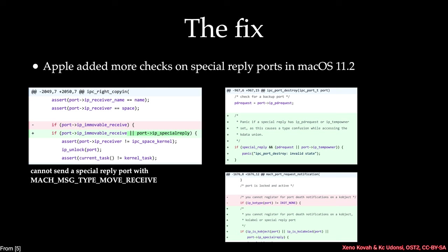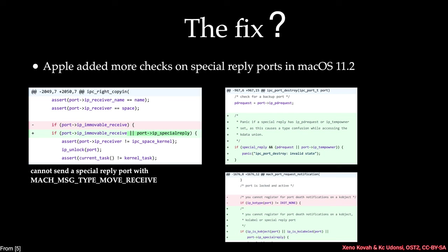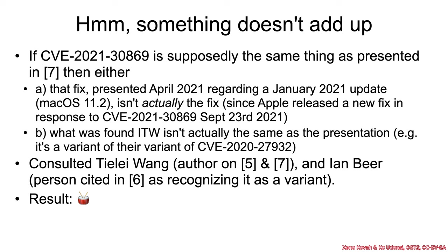What was the fix for this vulnerability? They said the fix occurred in macOS 11.2, adding new checks for special reply ports in ipc_write_copy_in, ipc_port_destroy, and mach_port_request_notification, so you can't send a special reply port with mach_msg_type_move_receive. But macOS 11.2 was released in January 2021, whereas the vulnerability was found in the wild in August 2021 — something's weird with the timeline. Either the fix presented in April 2021 regarding the January 2021 update isn't actually the complete fix, or what was found in the wild is a variant of their variant.